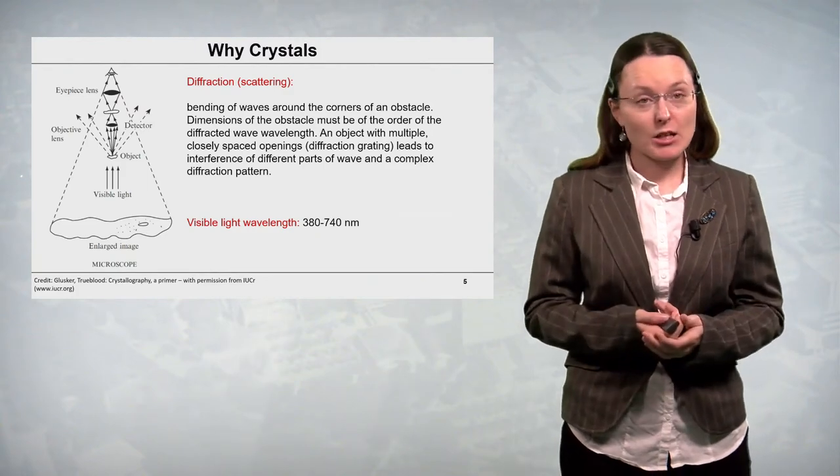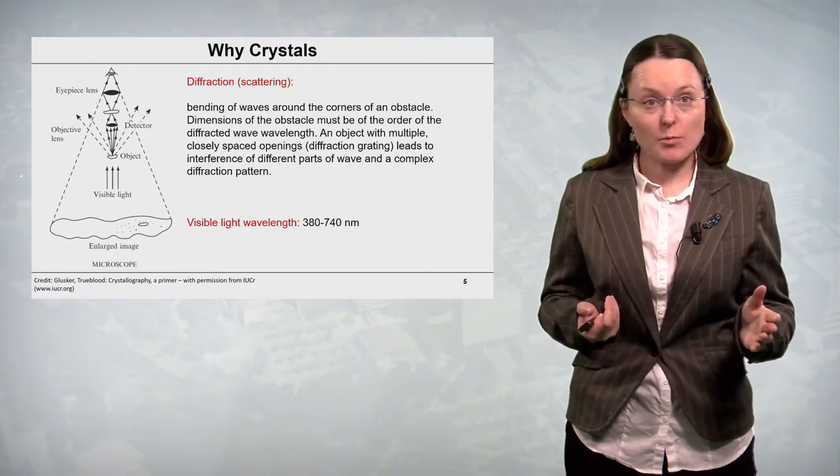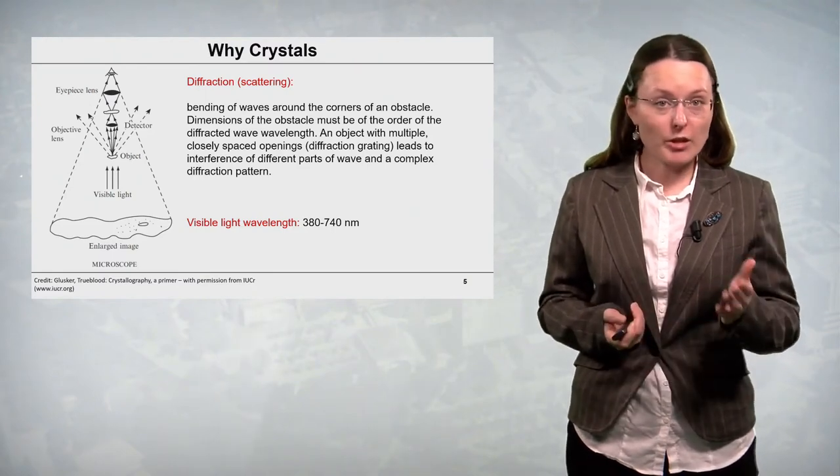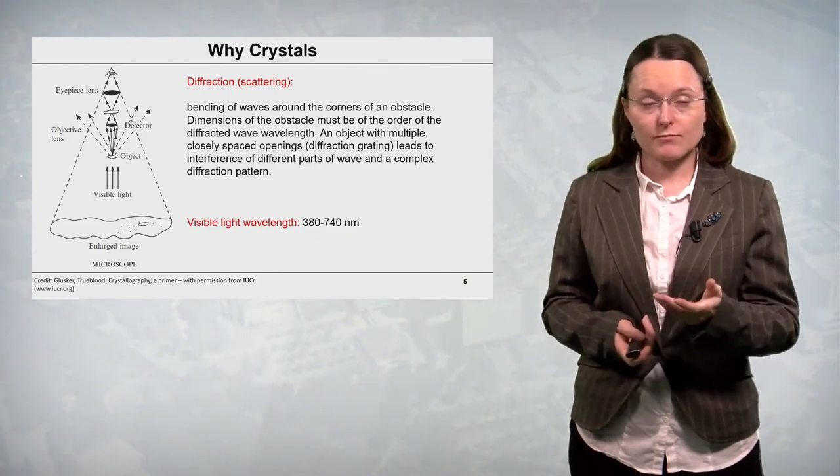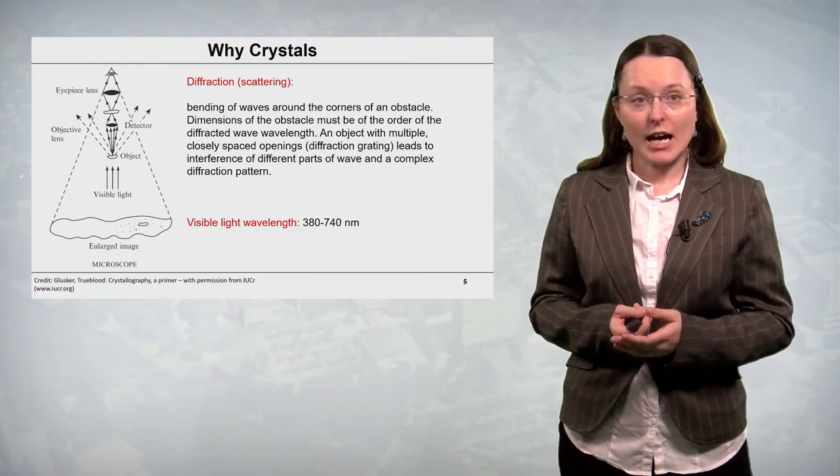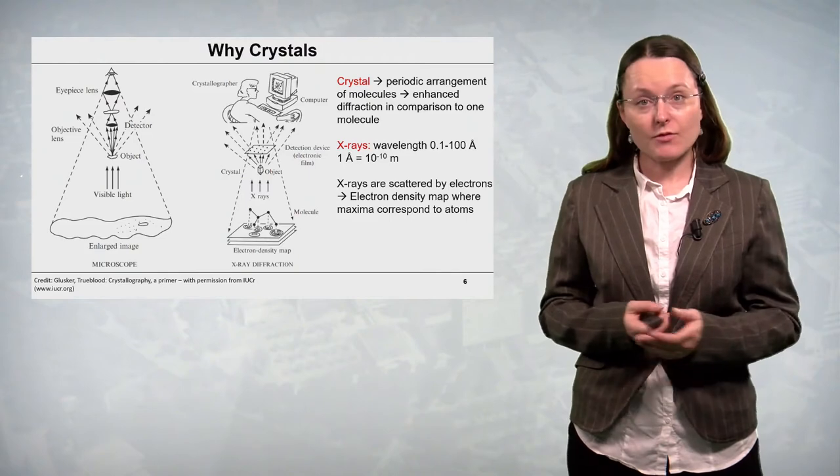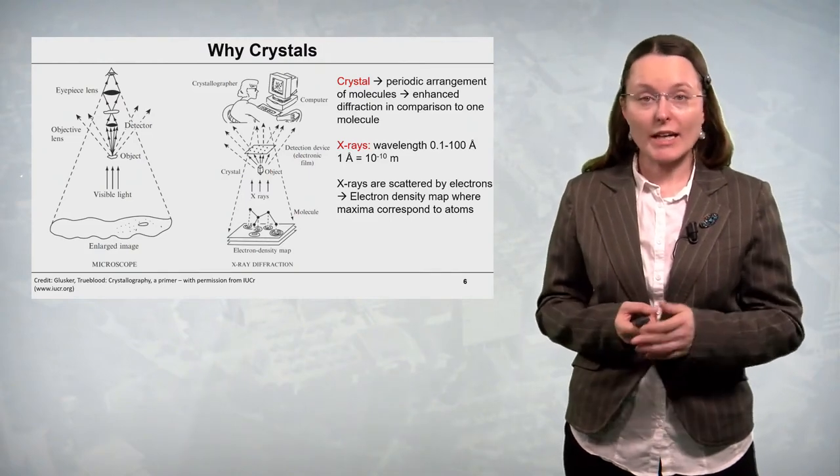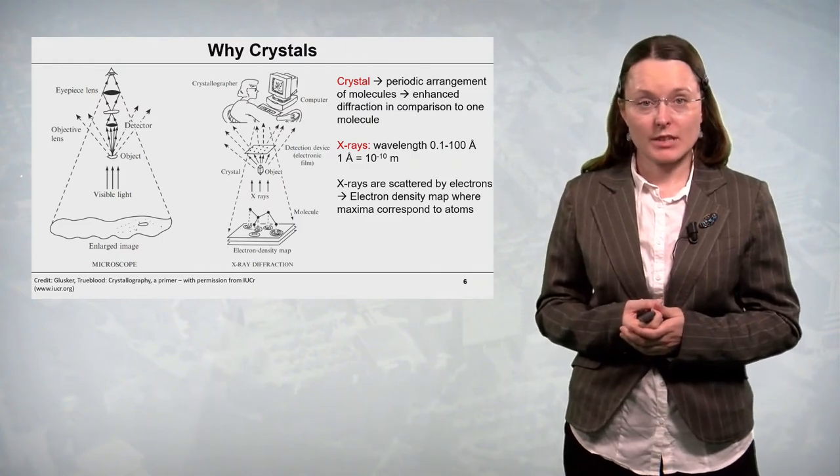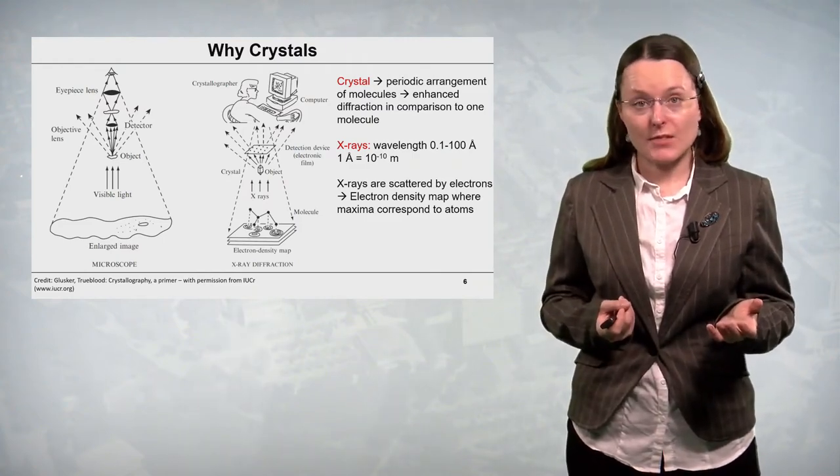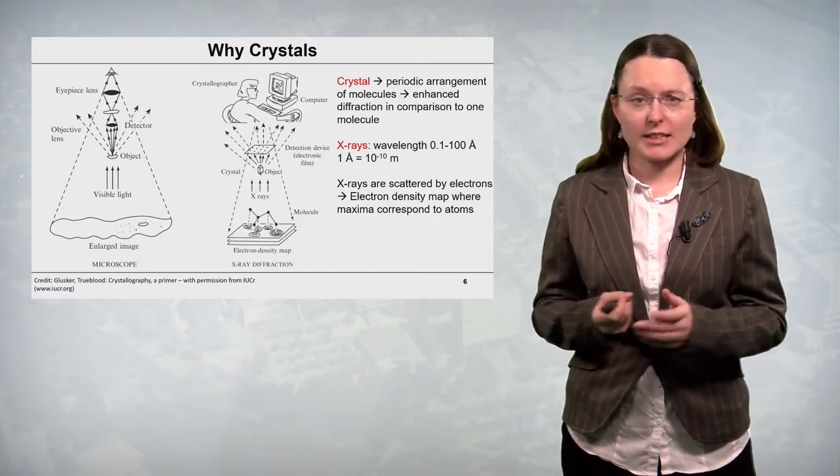Now let's say we would like to do the same to a molecule which is even smaller. Molecules are so small that the only light which would be diffracted by molecules are X-rays. X-rays have a wavelength from 0.1 to 100 angstroms. Angstrom is a very small part of meter. And the molecule is a very small object. So diffraction of X-rays on a molecule would be very hard to detect.